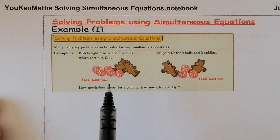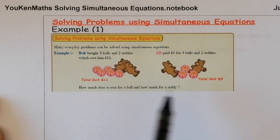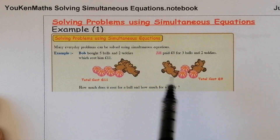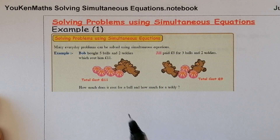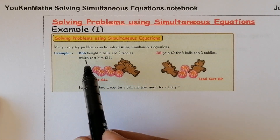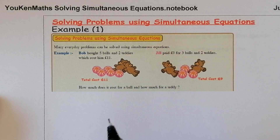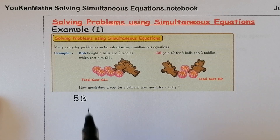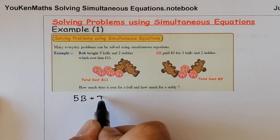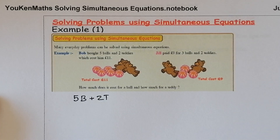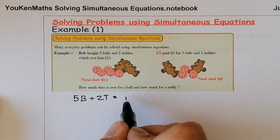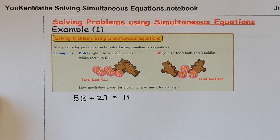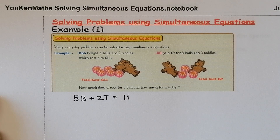I'm going to start off by working out the equations for both of these. The first thing we're looking at is what Bob bought. He bought five balls, so I'm going to use 5B for the balls, plus two teddies, and that cost him £11. I'm working in pounds. At the end I'll make a statement that clarifies what B and T represent.